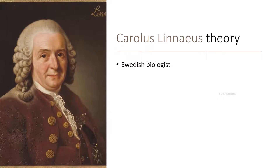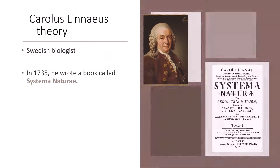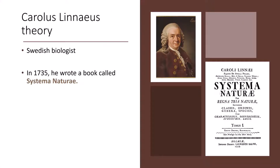Corleus-Lineus was a Swedish biologist, also known as Colfon-Lineus. He suggested that the variety of life should be studied systematically and similar organisms need to be placed in the same group. In 1735, he wrote a book called Systema Naturae, in which he described the systematic way of naming organisms.